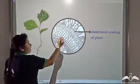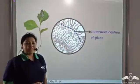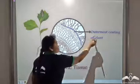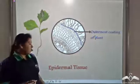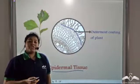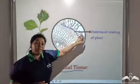This is the outer coating that gives protection to the leaves and other plant parts. And this outermost coating of the plant is known as the epidermal tissue. So just like you and me have skin, plants have epidermal tissue.